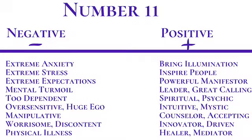11 is a master number, and master numbers are different from the other numbers because we do not add the two digits together — we keep them as two-digit numbers. All other numbers in numerology we reduce to a single digit, but if you get an 11, 22, or 33, you do not add the digits because these are master numbers and they hold the vibration of two digits.